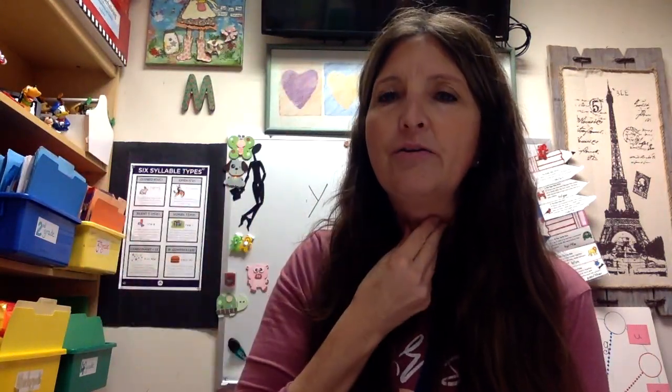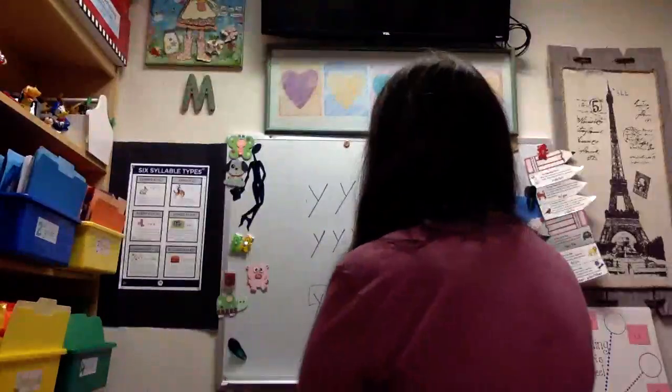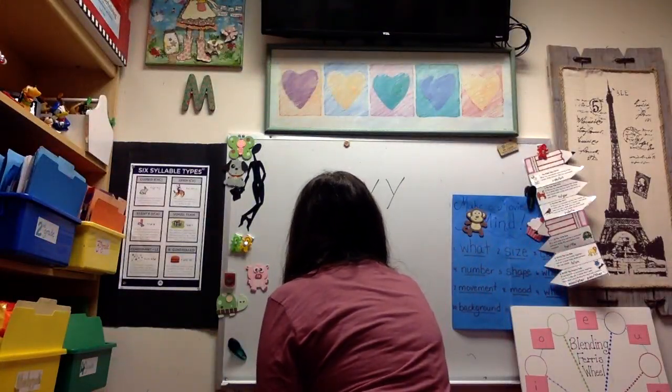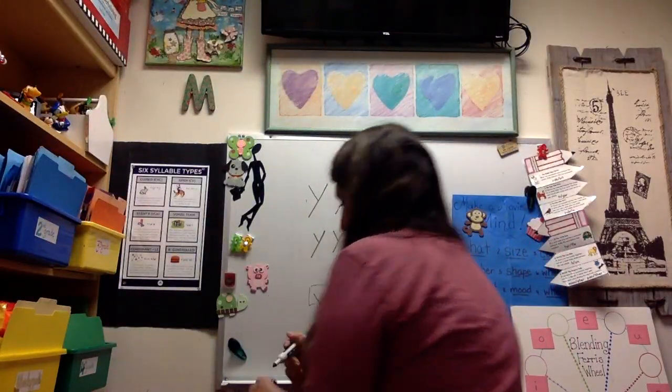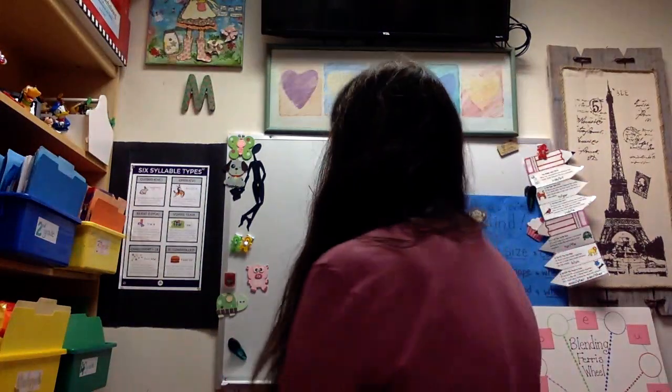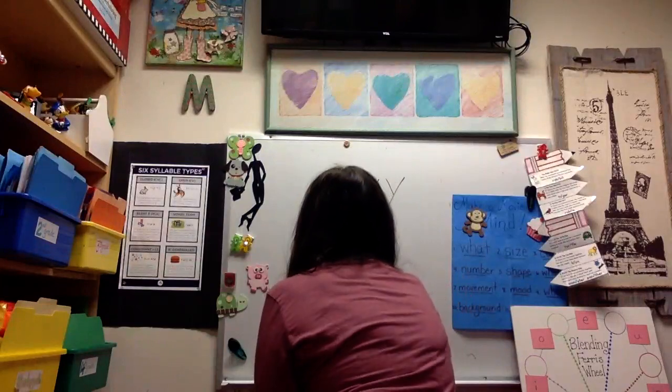Let's listen: yuh, eh, ss. Second sound eh — hand on your throat, voiced and continuous, letter name E. Yes — yuh, eh, ss. Third sound ss — hand on your throat, unvoiced, continuous, letter name S. Yes.